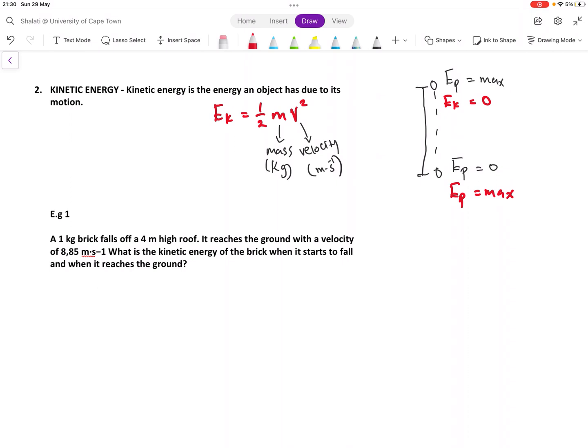Let's look at this example. A 1 kg brick falls off a 4 meter high roof. It reaches the ground with a velocity of 8.85 meters per second. What is the kinetic energy of the brick when it starts to fall and when it reaches the ground? Now let's try and analyze this question. As I already said, try to analyze the question, find out what is given, then ask yourself, what are you asked to do. And then you write down the formula.